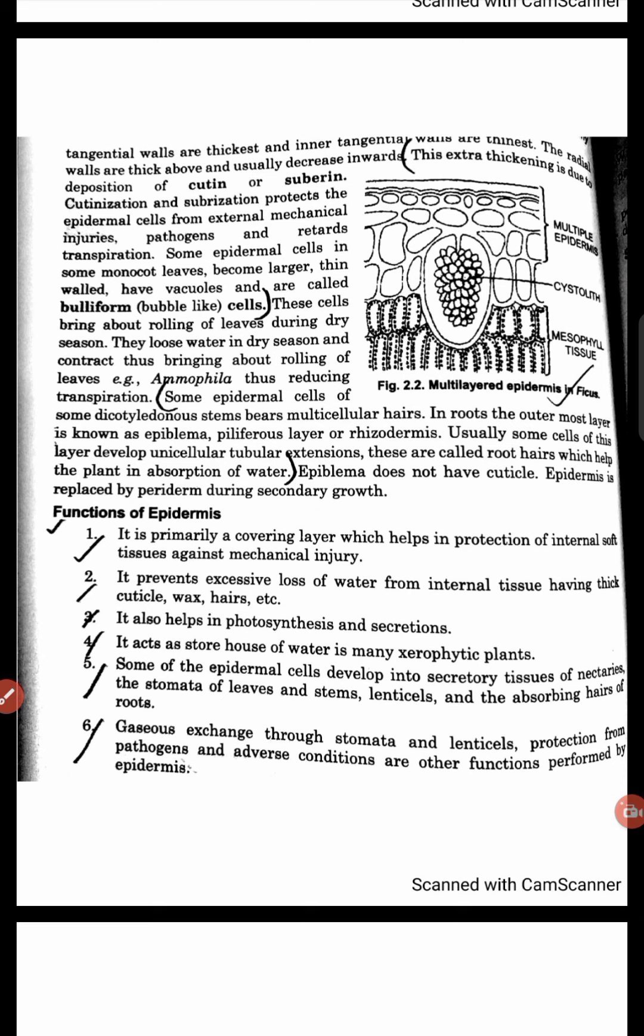The rate of transpiration will decrease. Some epidermal cells in monocots often enlarge because their vacuoles are enlarged. We call these bulliform cells.